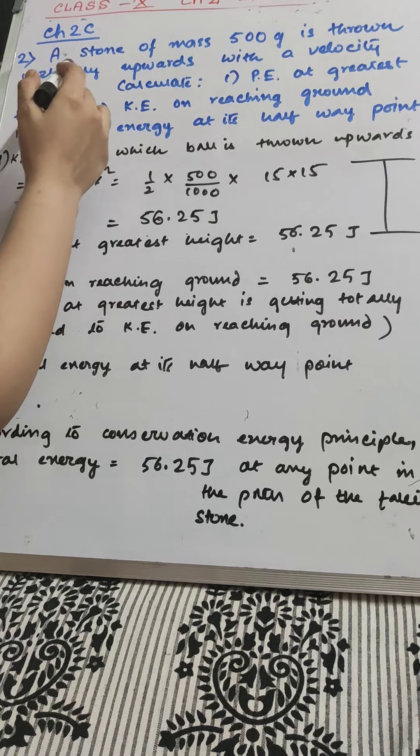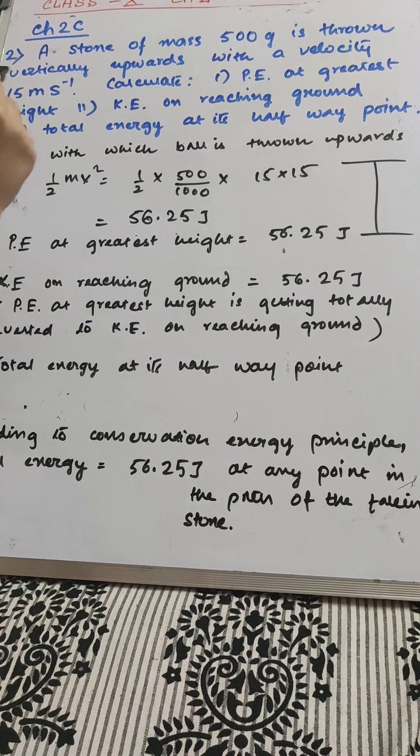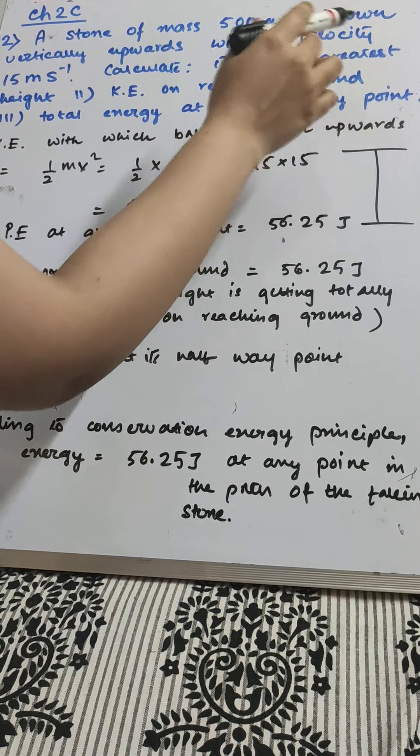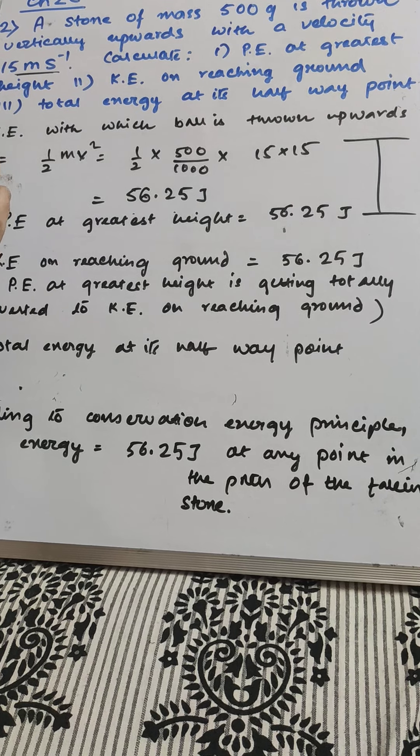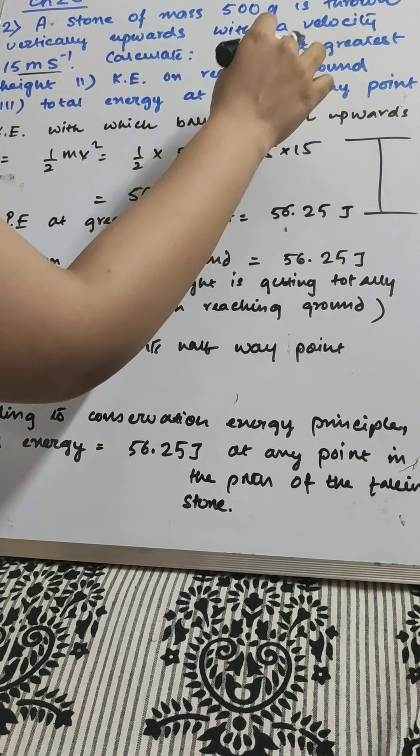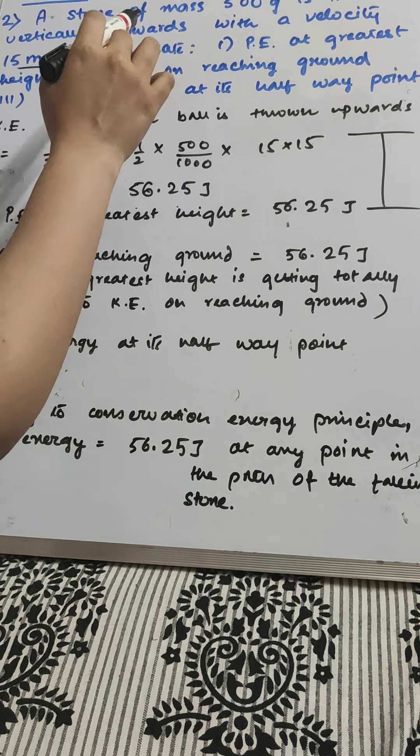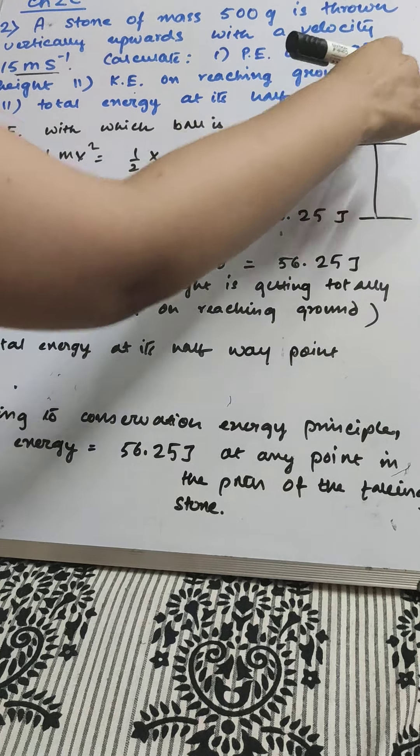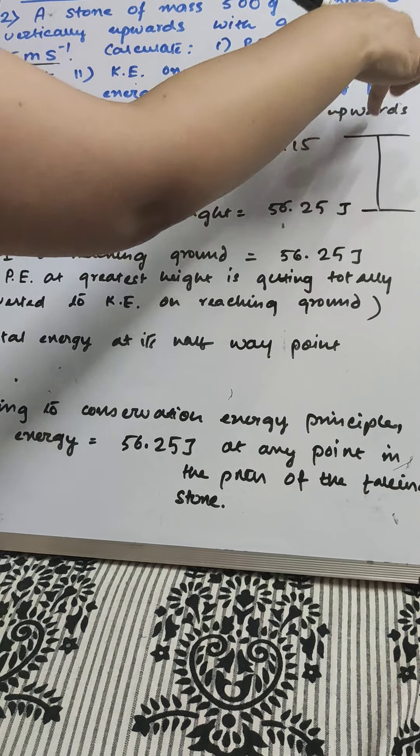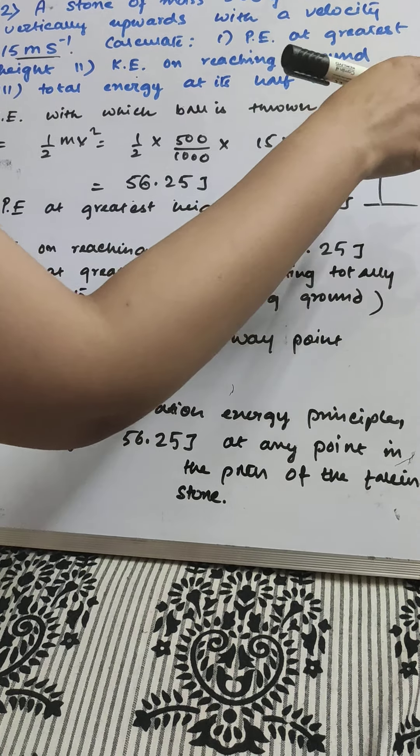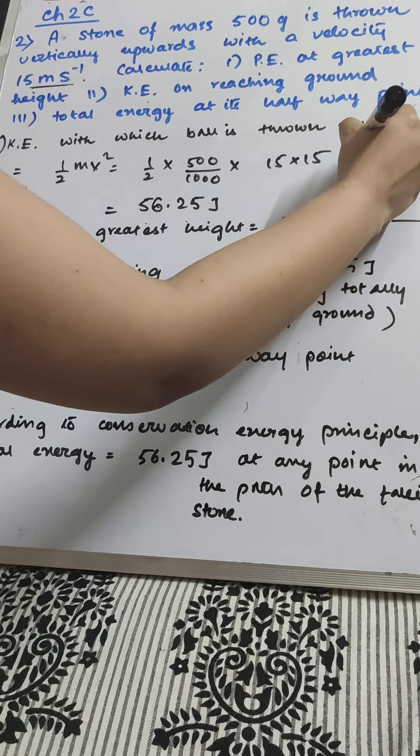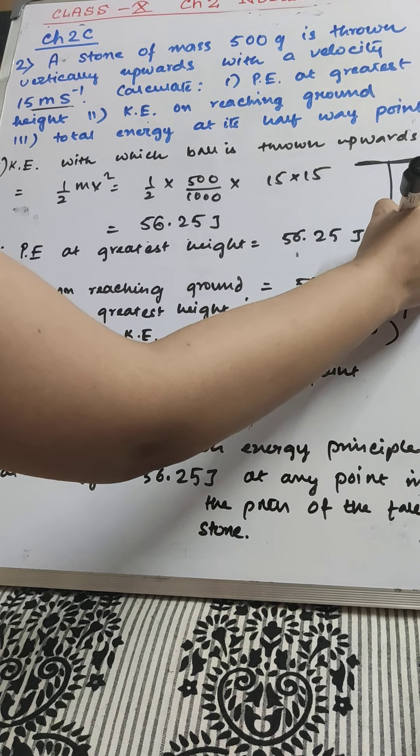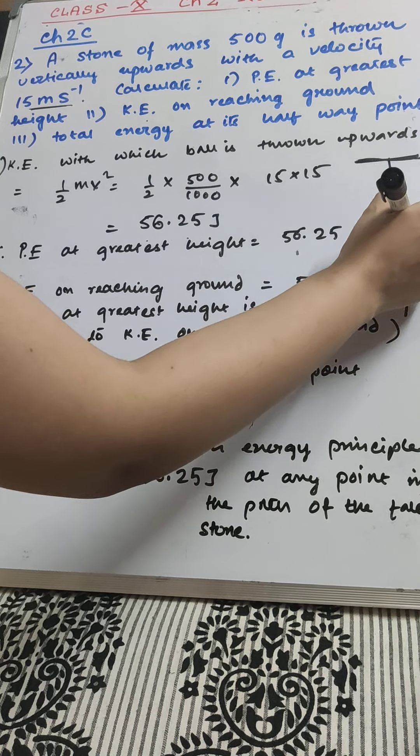Look at this sum, Chapter 2C. A stone of mass 500 gram is thrown vertically upwards with a velocity 15 meter per second. Calculate the potential energy at the greatest height and kinetic energy on reaching the ground. You are throwing the stone upwards, it will reach a certain height after which it will automatically fall down.